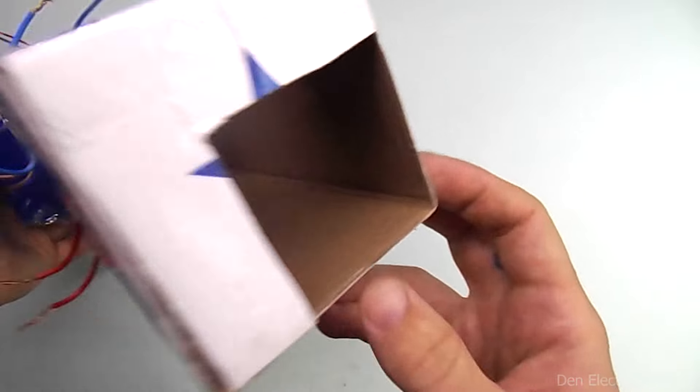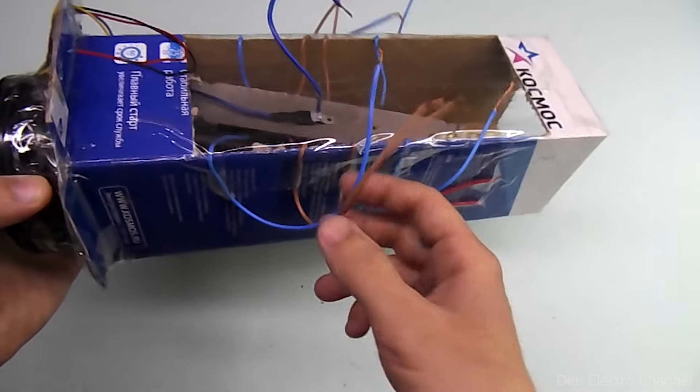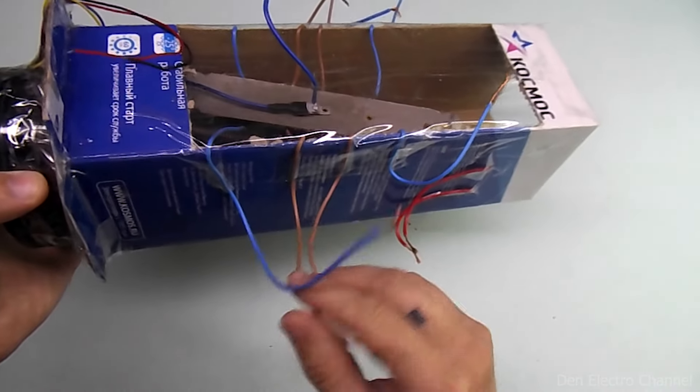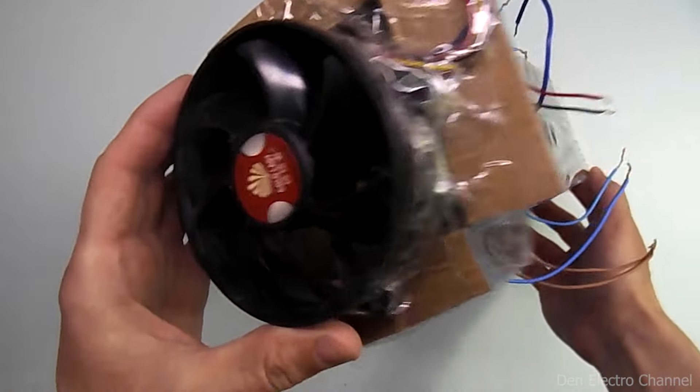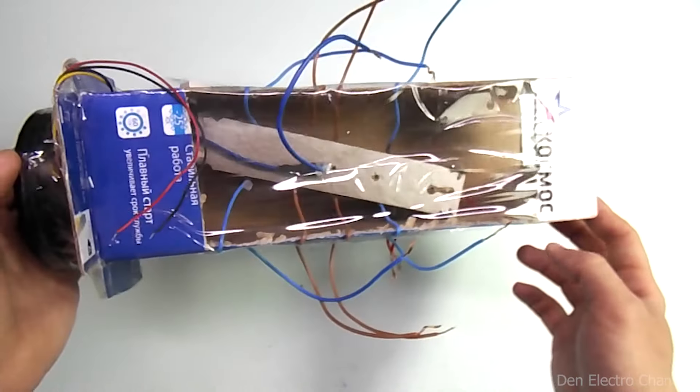Inside there is a heating element taken from an old heater. It has nichrome wire wound in it. There are many wires connected to it. By combining different wires, you can adjust the power. The fan from the processor blows air over this whole thing.